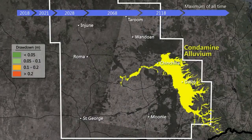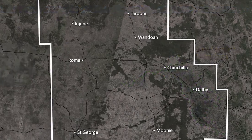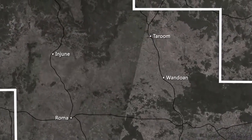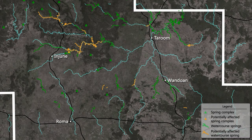In the Condamine Alluvium, which sits directly above the Walloon coal measures, the predicted impact is less than 0.2 metres across most of the area. There are some springs and watercourses that are predicted to be impacted in the northern parts of the CSG production areas, but the impacts are generally less than a metre.